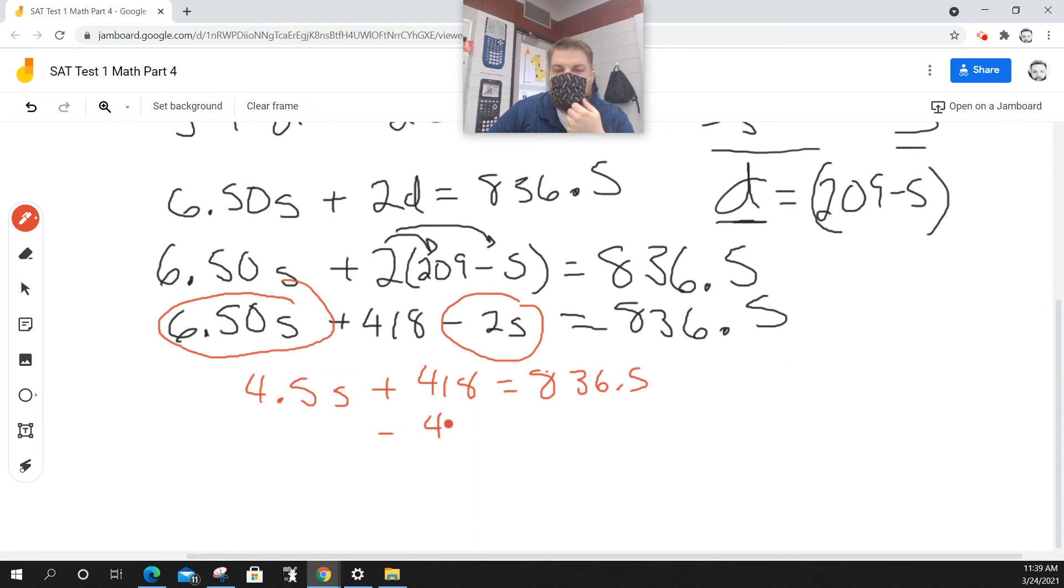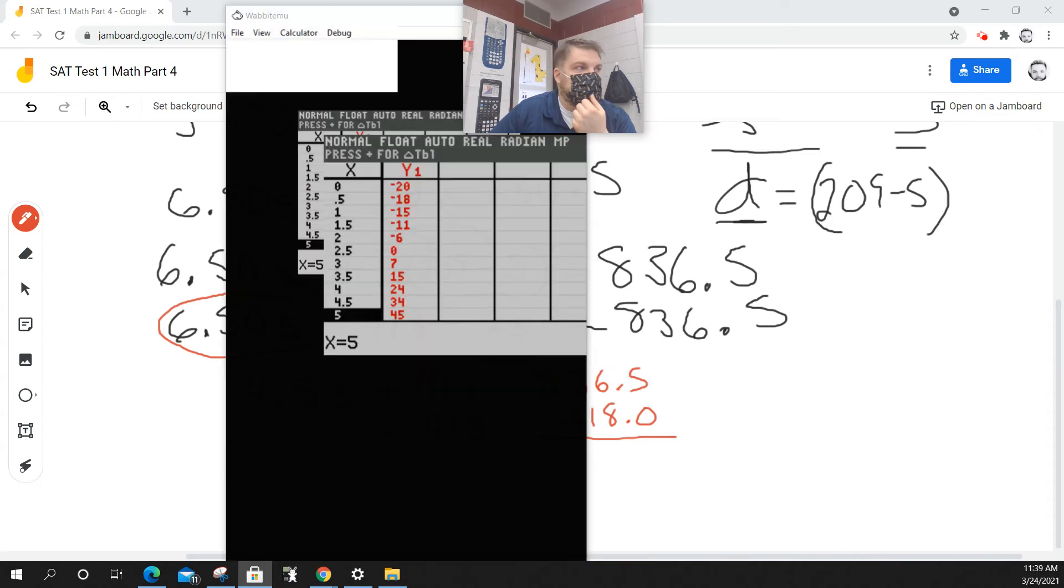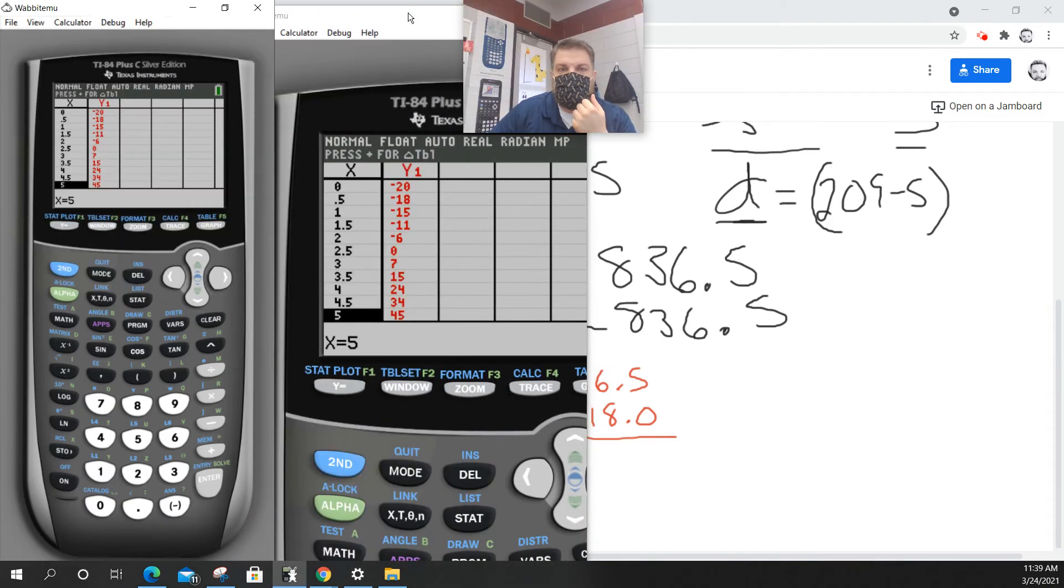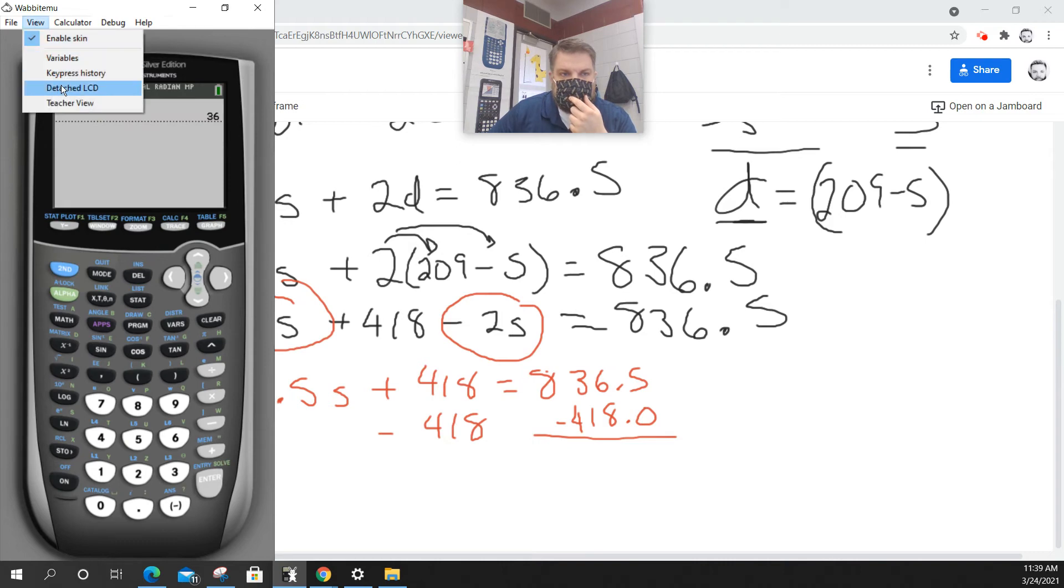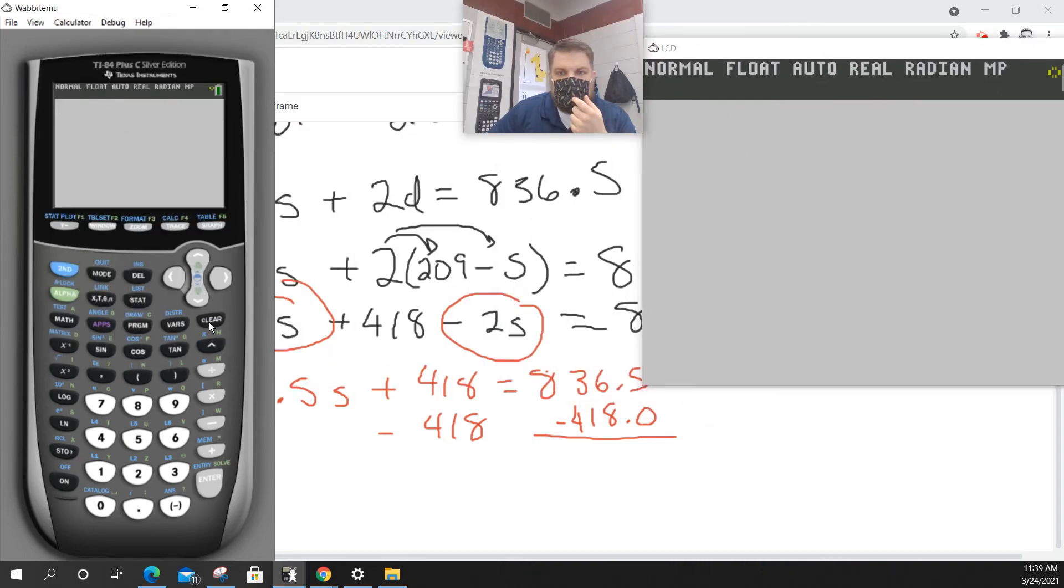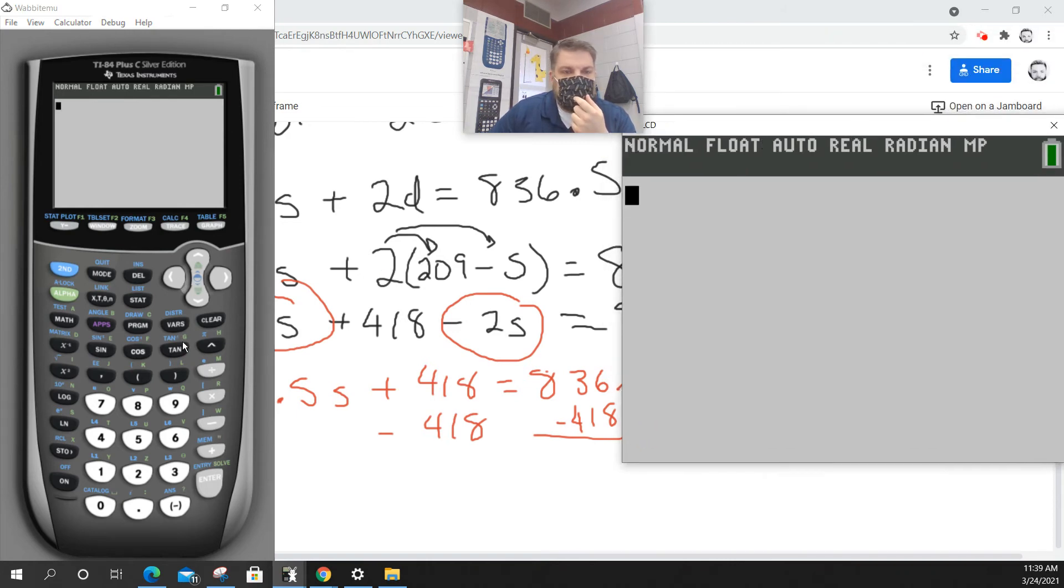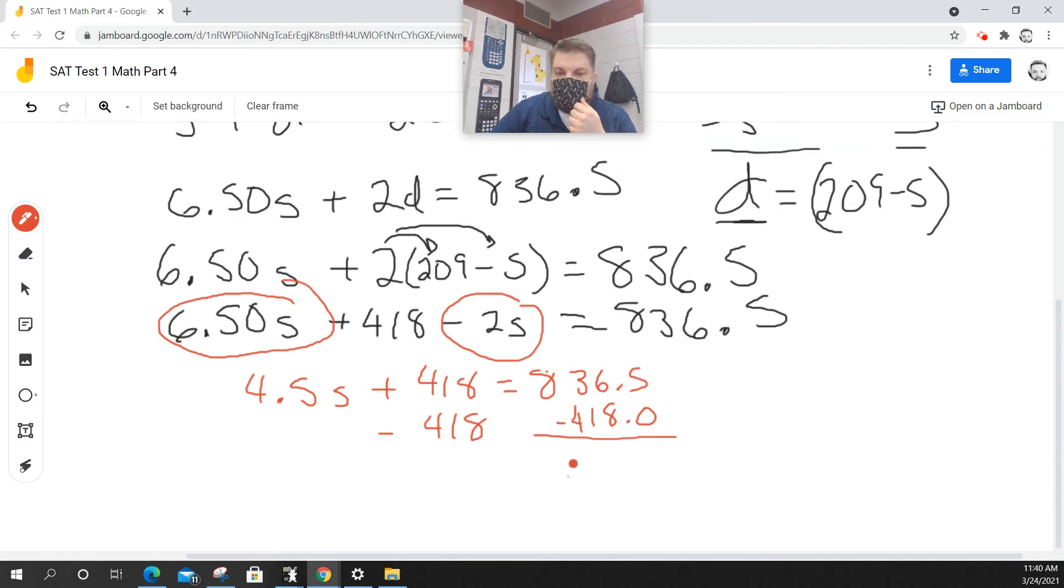What do I do next? Subtract 418 from both sides. I'll just use my handy-dandy calculator for that. So I'm going to take 836.5 and subtract 418 from it. I get 418.5.